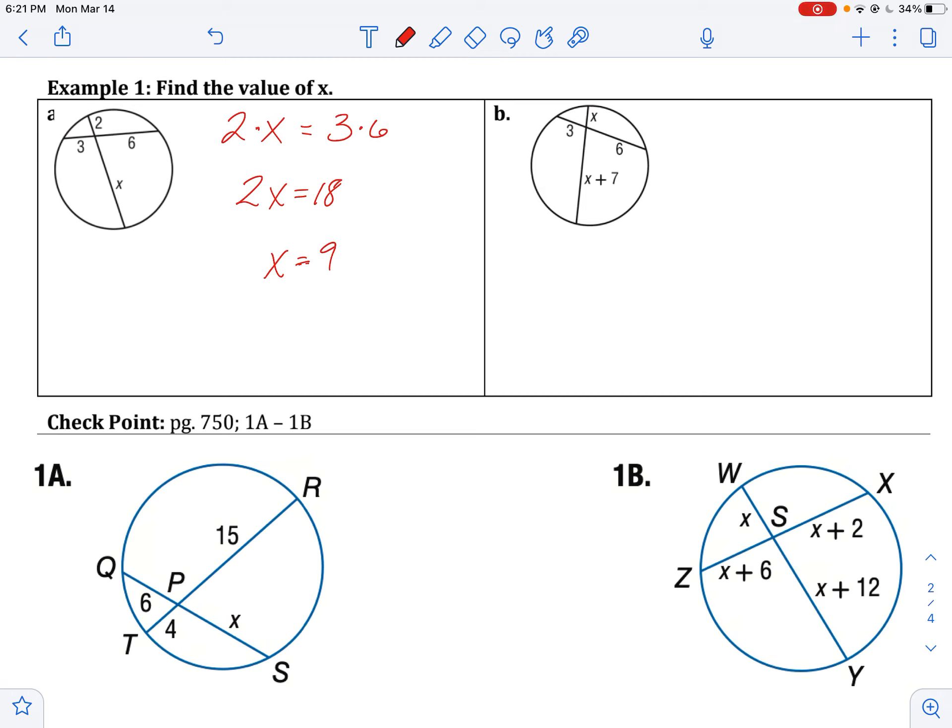On B, it gets a little bit tougher. Why don't you take a second, pause the video, and write out your equation on your own. So this would be 3 times 6 equals X times the quantity of X plus 7. And then I can solve this 18 equals X squared plus 7X. And what do I do now? Well, now I have to get X squared plus 7X minus 18 equals 0. And I'm going to factor this.